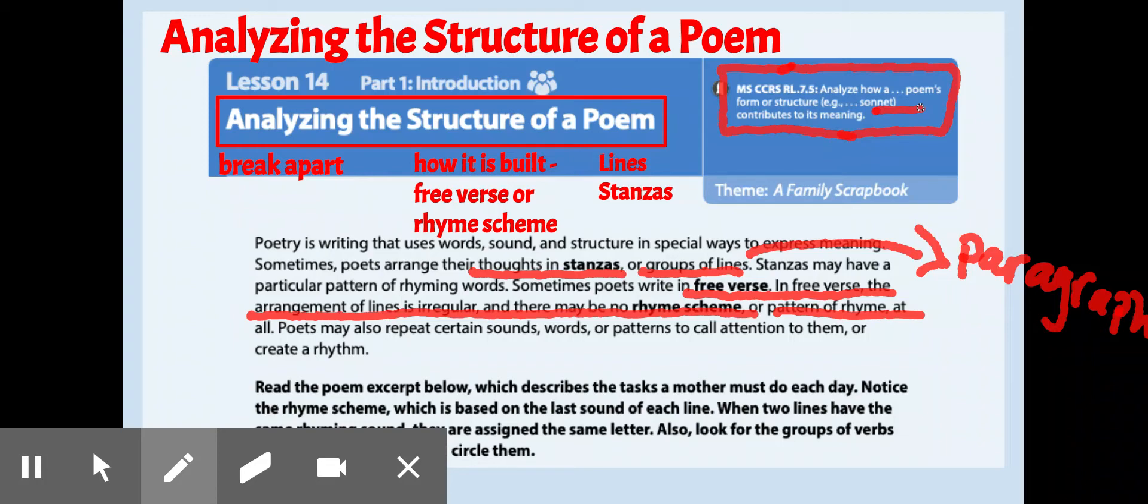It gives you an example of a sonnet here, which we're going to take notes on tomorrow, but also lyric poems that we've been talking about, narrative poems that tell a story, limericks, ballads, they all have different structures that build on its meaning. One of the things we've been learning about with lyric poetry is those strong emotional feelings that are there, and also it usually has a musical quality to it, which kind of gives it a sing-songy rhythm. Now, just to reiterate, poetry, right here, is writing that uses words, sound, and structure in special ways to express meaning. And then our very last sentence of this also tells us that poets may repeat certain words, sounds, or patterns to call attention to them or to create a rhythm.